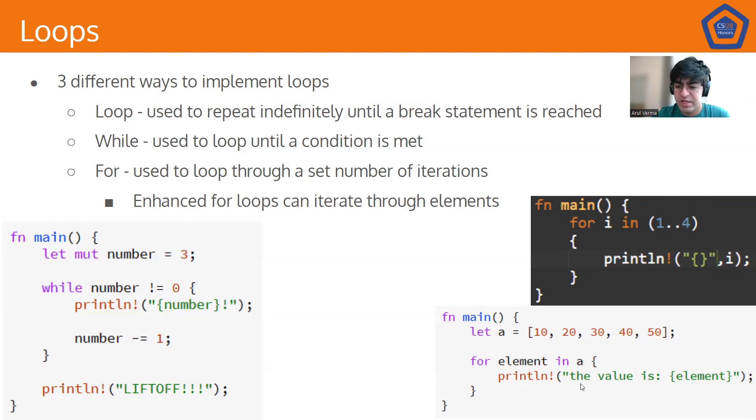And here we see another enhanced for loop, specifically for iterating through the elements of an array. We have let a equals 10, 20, 30, 40, 50. And for element in a, we'll get a print of 10, 20, 30, 40, 50.